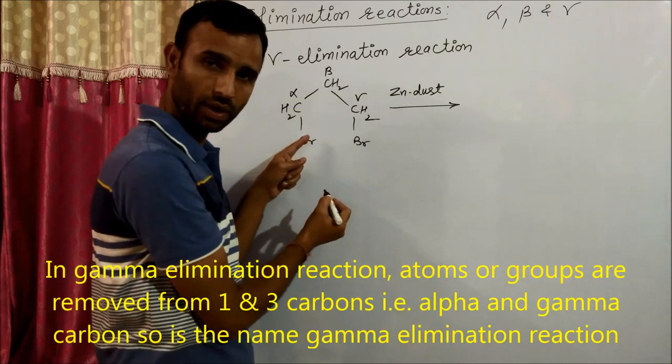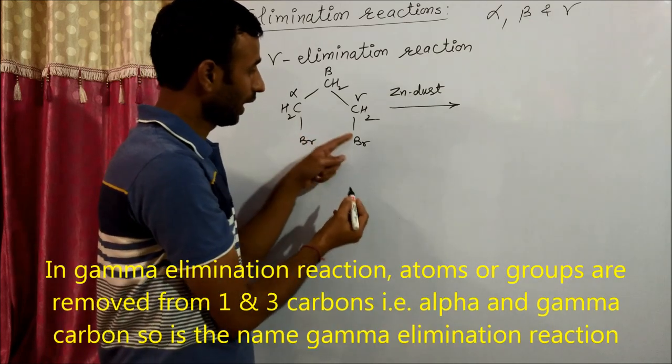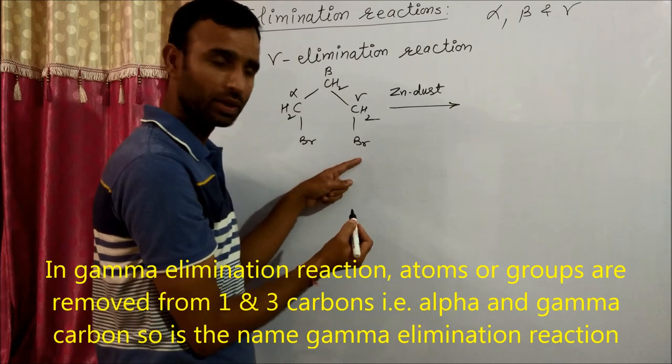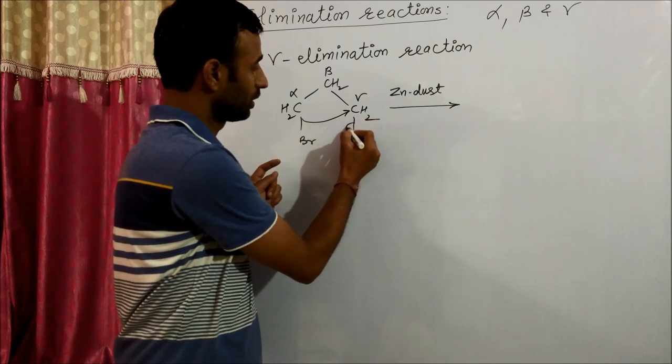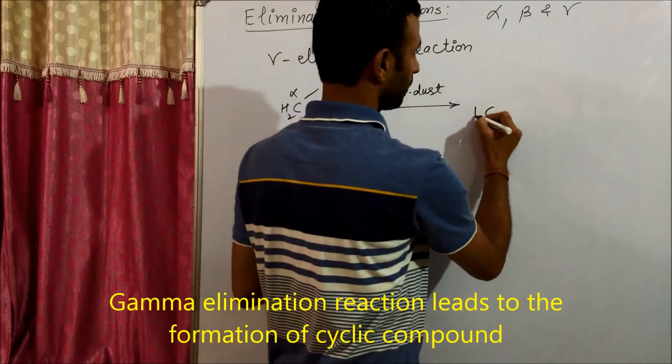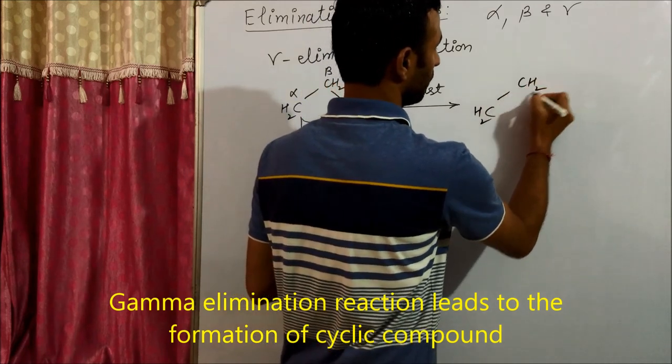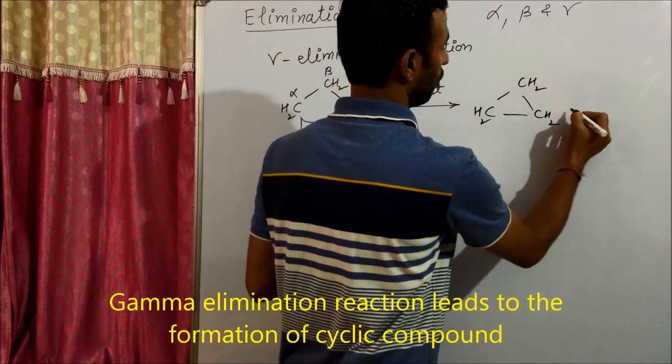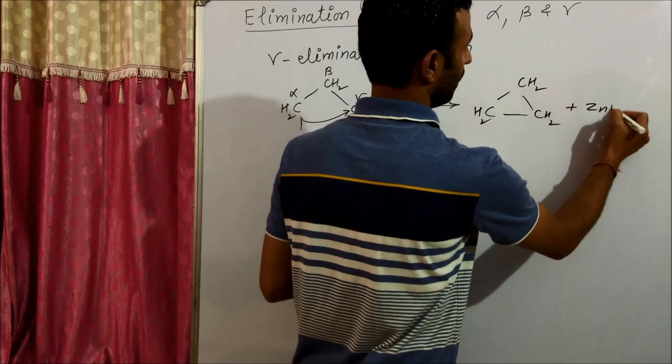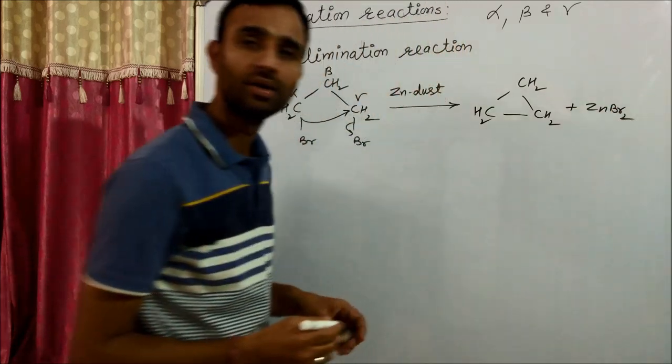Bromine from alpha carbon and from gamma carbon are removed, and we get cyclopropane along with ZnBr2.